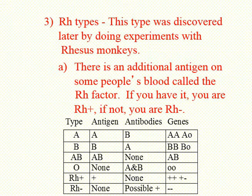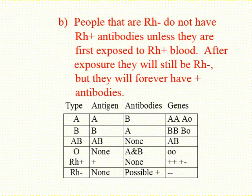So the true universal donor must therefore be O negative — red blood cells that don't have the A, B, or Rh-positive antigen, so they can give to anybody. And the true universal recipient would be AB positive, because they can receive from either a negative or a positive person.